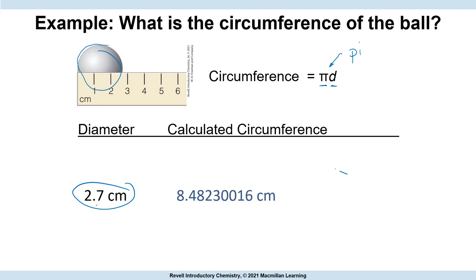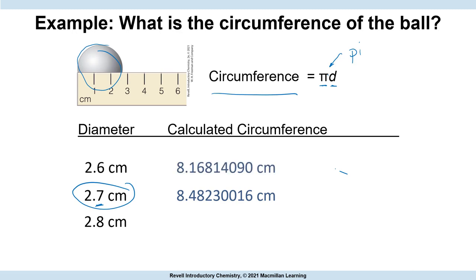Remember, we're not 100% confident in that last digit — it might be 2.6. So let's do the same calculation for circumference with 2.6 as our diameter, and then with 2.8. We get different numbers, as you would expect. So clearly in our three different numbers, there's uncertainty in that second digit.